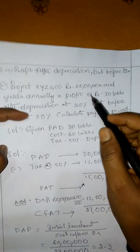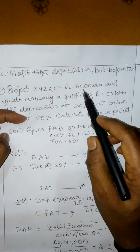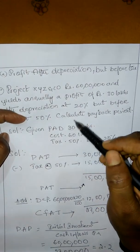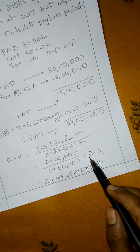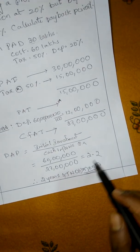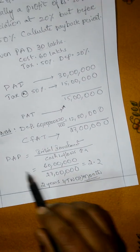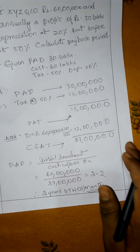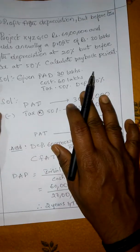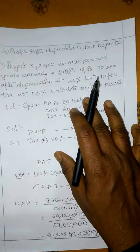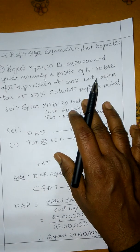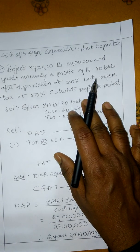That means 60 lakhs cash inflow will take 2 years and 2 months payback period. In this way, we solved this problem. Next, net present value problems will be discussed. Thank you.